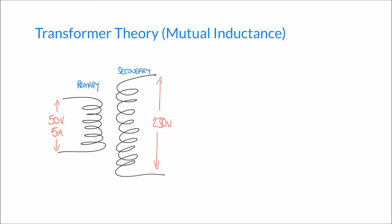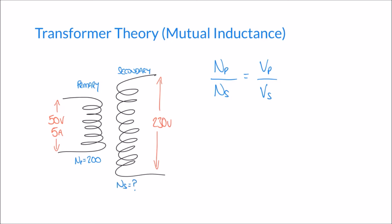Because this is governed by the ratio of the number of turns, it leads us to the important formula for transformer theory: Np over Ns equals Vp over Vs. Np represents the number of turns on the primary coil and Ns the number on the secondary. In our example, we have 200 turns on the primary (Np = 200), and we want to step up 50 volts to 230 volts. The question is: how many turns are required on the secondary coil? Ns is the unknown.